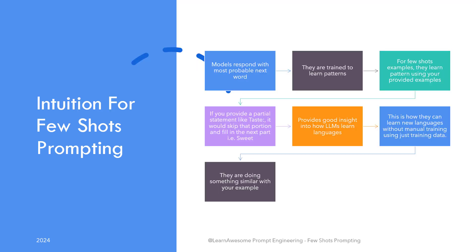Large language models like ChatGPT would continue to play along in subsequent prompts as they have learned the pattern. Models try to respond with the most probable next words — they are learning patterns, and here the model learned the pattern using the examples you provided. It is pattern following at its best. This also gives you good insight as to how the model learns language itself, where during its training it picked up on repeating patterns in training data. This is why large language models can speak and translate into languages they are not even explicitly trained on.